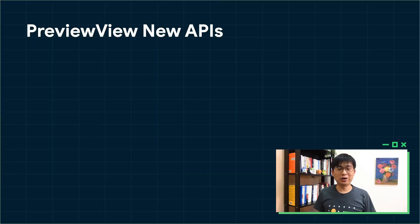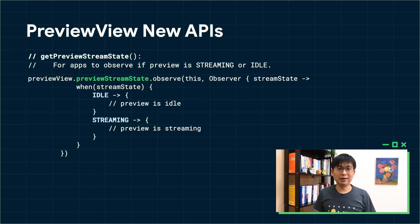Today, we added two APIs to PreviewView. First, the GetPreviewStreamState API. This API allows the application to be notified when the preview is streaming or idle. This is useful for applications that want to avoid displaying a temporary black screen while the preview is starting. For example, they can show a placeholder image on top of PreviewView when the preview is idle, and hide the placeholder when the preview is streaming.